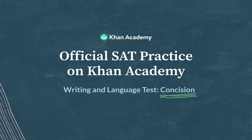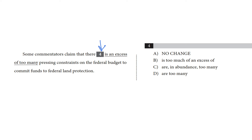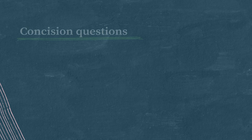We are looking at question four here. Some commentators claim that there is an excess of too many pressing constraints on the federal budget to commit funds to federal land protection. The three other choices are all similar versions of that underlined phrase, so this tells me that this is a concision question.